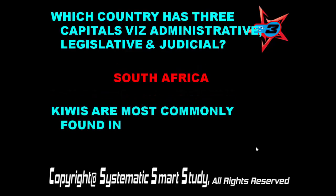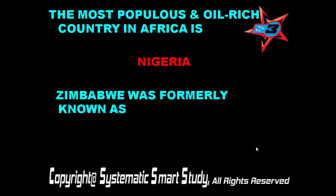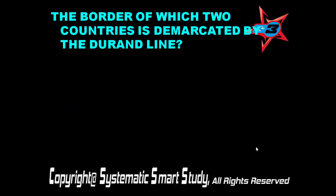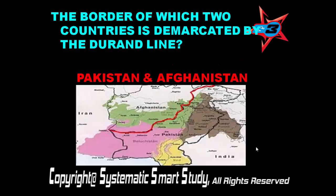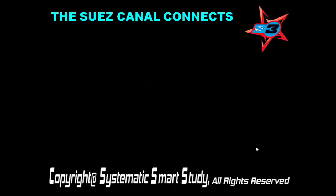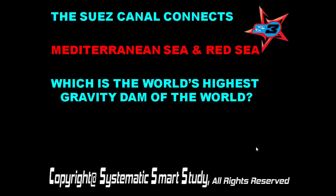Kiwis are most commonly found in New Zealand. The most populous and oil-rich country in Africa is Nigeria. Zimbabwe was formerly known as Rhodesia. The border of which two countries is demarcated by the Durand Line? Pakistan and Afghanistan. The Suez Canal connects the Mediterranean Sea and the Red Sea.